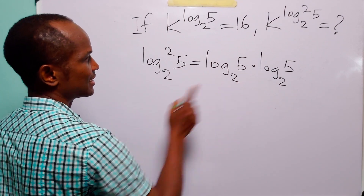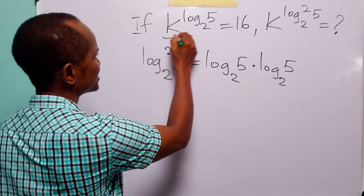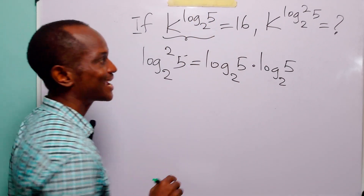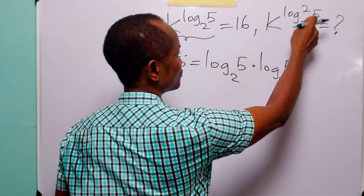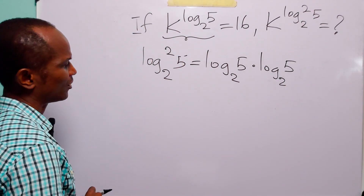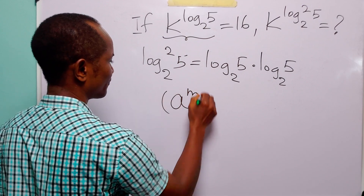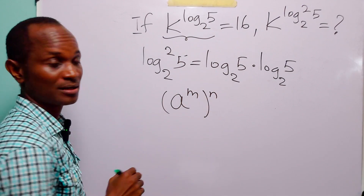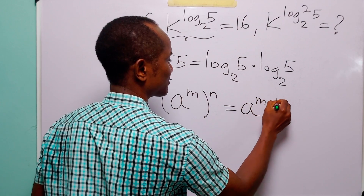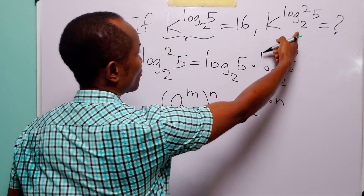With this in mind, the question becomes: what do we do to k^(log₂5) to get k^(log₂²5)? Remember from our laws of indices that when we have a to the power m, raised to the power n, this is simply equal to a to the power m multiplied by n.